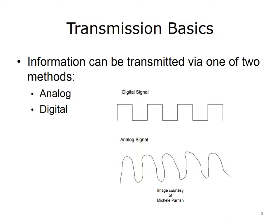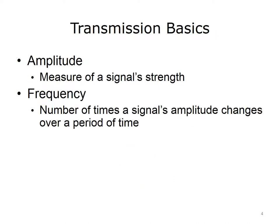It may be hard to tell the exact time on an analog clock, but with a digital clock, you can tell exactly what time it is. A couple of characteristics of a signal are amplitude and frequency. Amplitude is the height of a wave at a given period of time. Frequency is the number of times a signal changes in a given period of time, and it is measured in Hertz.